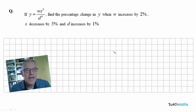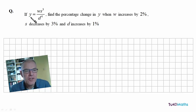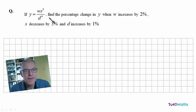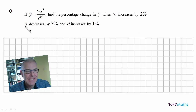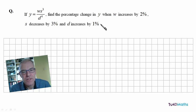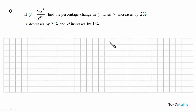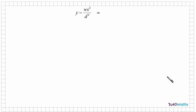So let's have a look now at a question that involves three variables. Here we're given a function y which is equal to w times s to the power of 3 over d to the power of 4. And we're asked to find the percentage change in y when w increases by 2%, s decreases by 3%, and d increases by 1%. So we could rewrite y as w times s to the power of 3 times d to the power of minus 4.